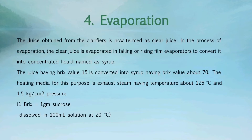The fourth major process is evaporation. The juice obtained from the clarifiers is now termed as clear juice. In the process of evaporation, the clear juice is evaporated in falling or rising film evaporators to convert it into a concentrated liquid named as syrup. The juice having a brix value of 15 is converted into syrup having a brix value of about 70. The heating media for this purpose is exhaust steam having a temperature of about 125 degrees Celsius and 1.5 kilograms per centimeter square pressure. It is to be noted that 1 brix equals 1 gram of sucrose dissolved in 100 milliliters of solution at 20 degrees Celsius.